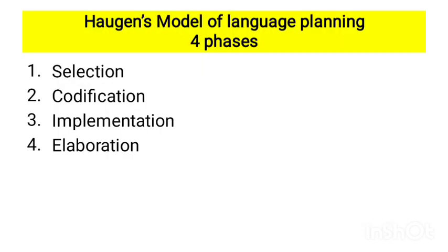There are four phases of language planning, and these phases were given by Haugen. This is known as Haugen's model. Please remember the sequence of these four phases: first is selection, then codification, then implementation, and then elaboration. Language planning takes place according to these four phases.